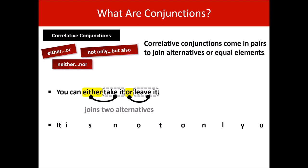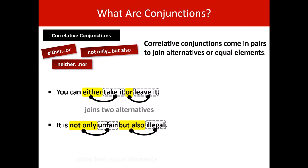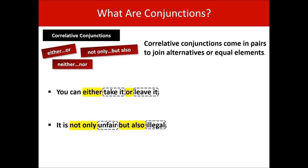It is not only unfair but also illegal — 'not only/but also' is our correlative conjunction, joining two equal elements. Like coordinating conjunctions, correlative conjunctions also join like with like. In this example there is an adjective after each part of the correlative conjunction. In the top example there are verbs after each part. When you use the same part of speech after a correlative conjunction, your sentence is said to be parallel.